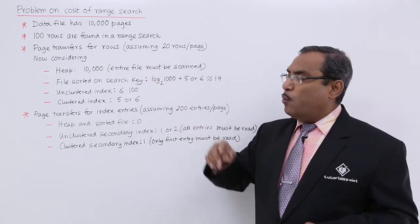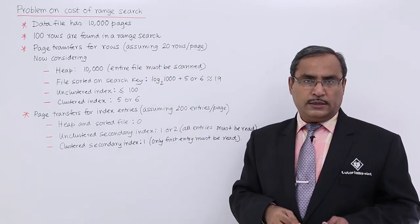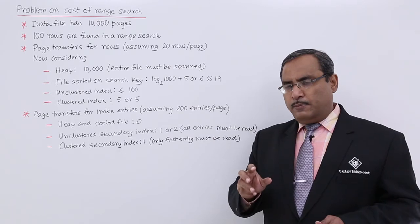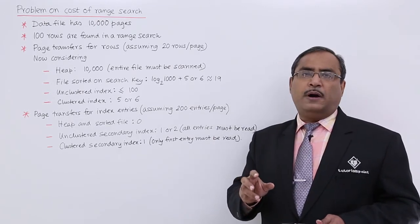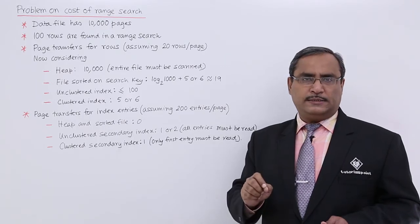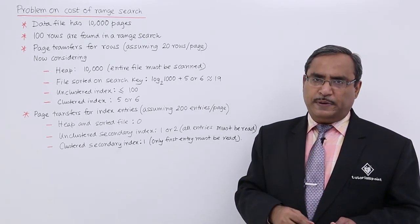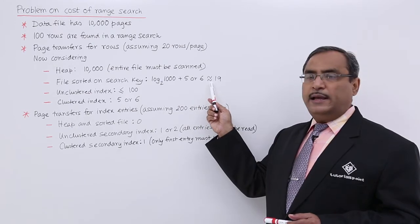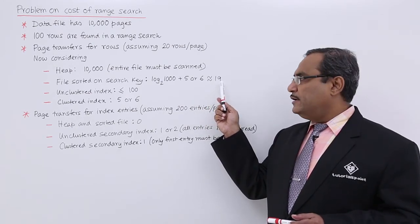And why this 5 or 6 will be there? Because after getting the respective page number from where, as the file is sorted, now I am supposed to read these 100 number of rows. To keep 100 number of rows and 20 rows per page means we can have minimum 5 pages are to be read or maximum 6 pages are to be read. So it is coming approximately towards 19.